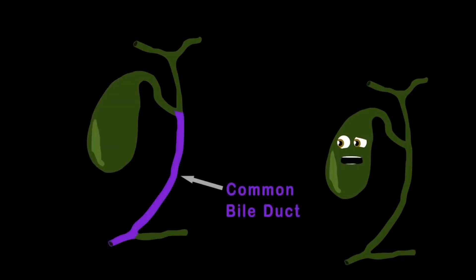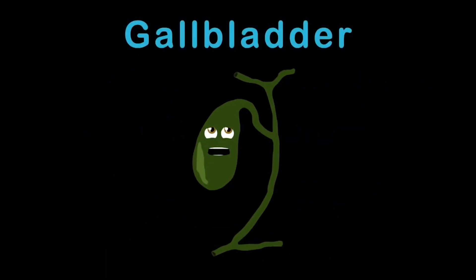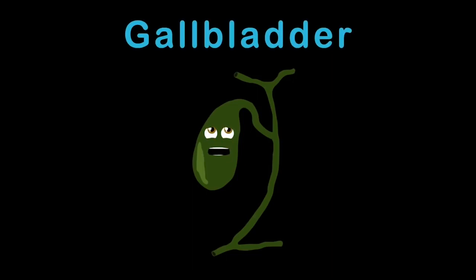To the common bile duct and the pancreatic duct, that is what I'm made of. I am your gallbladder. I am a sac-shaped organ, you see. I am a gallbladder. Your liver stores its bile in me.